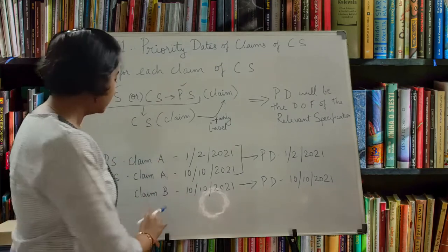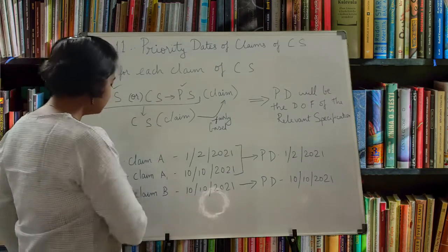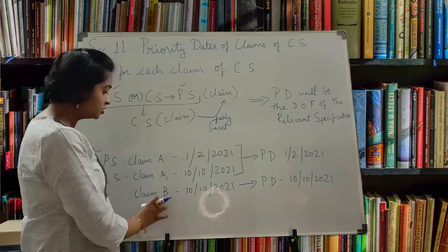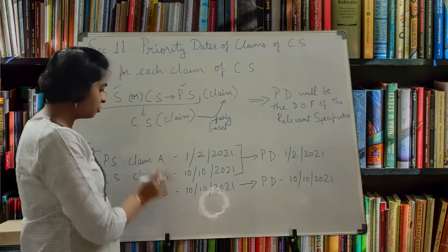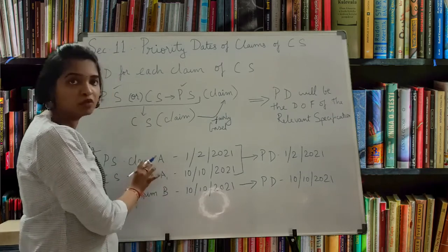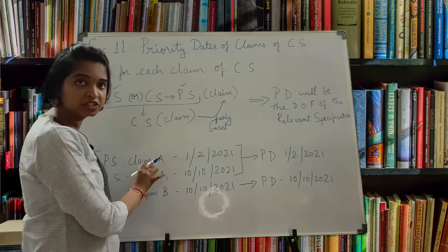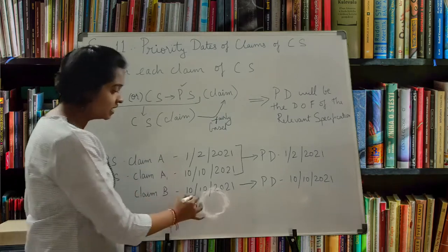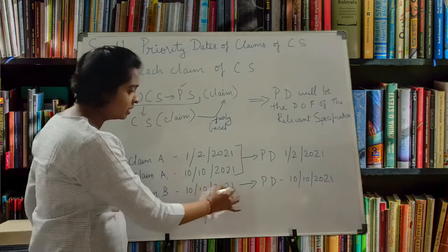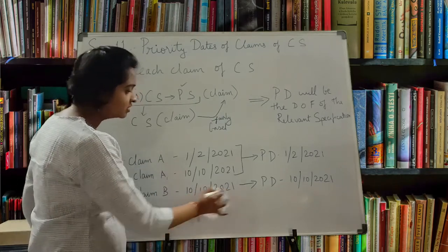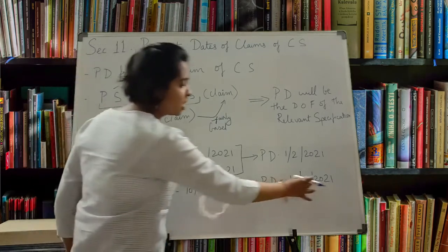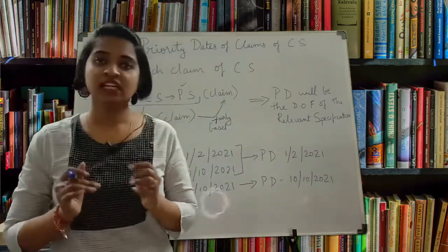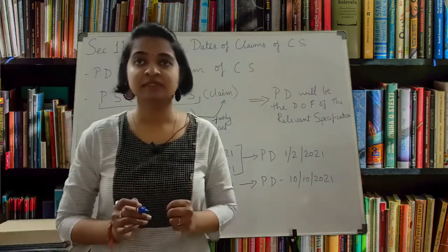Whereas for Claim B in the complete specification, there is no mention of it in the provisional specification. Therefore, the date when you filed this claim - that is 10-10-2021 - will be its priority date. So the priority date follows the earliest relevant specification in which the claim appeared.